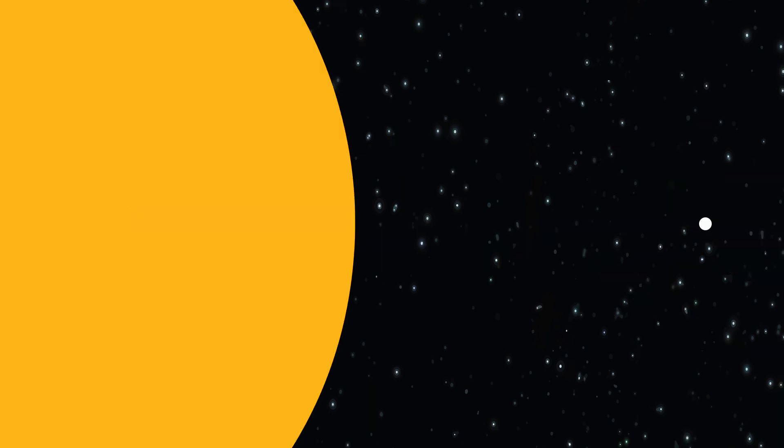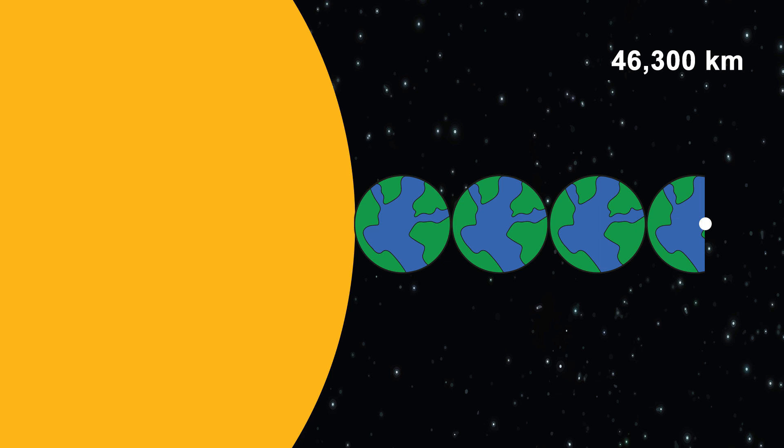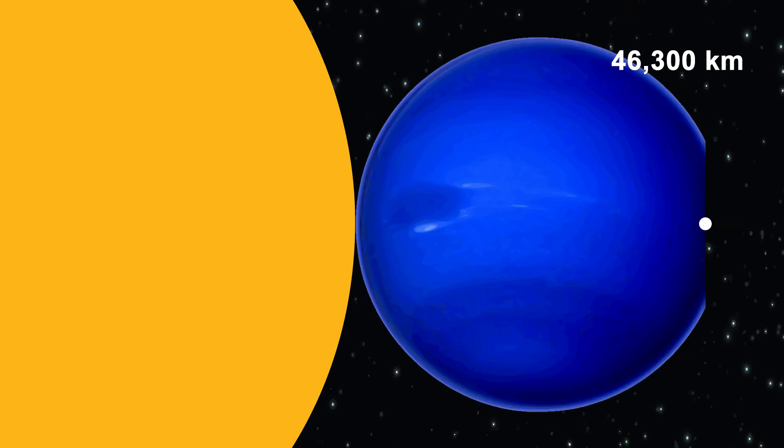Anyway, the center lies roughly 46,300 kilometers above the Sun's surface. That is the equivalent to 9.5 Mercury's, 3.6 Earth's, 6.8 Mars's, or almost 1 Neptune. And that's quite astronomical.